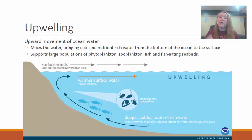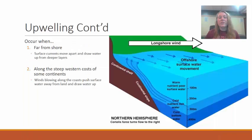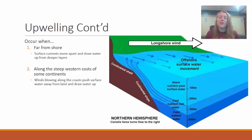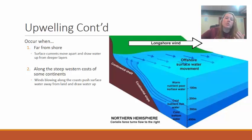With upwelling we are bringing all of that nutrient-rich water up to the surface, which really drives primary productivity in marine ecosystems. Upwelling can occur far from shore when surface currents move away from each other, creating a void where deeper water is pulled up to fill that space. More commonly, upwelling occurs along the shores, particularly the western coast of continents that have steep mountain ranges near the shoreline, where longshore wind pulls surface water away from the coast.